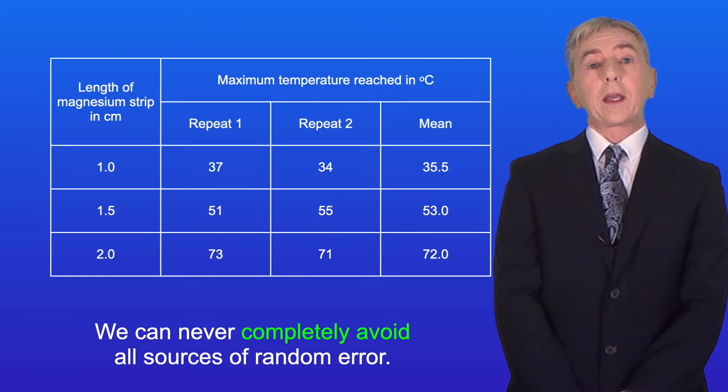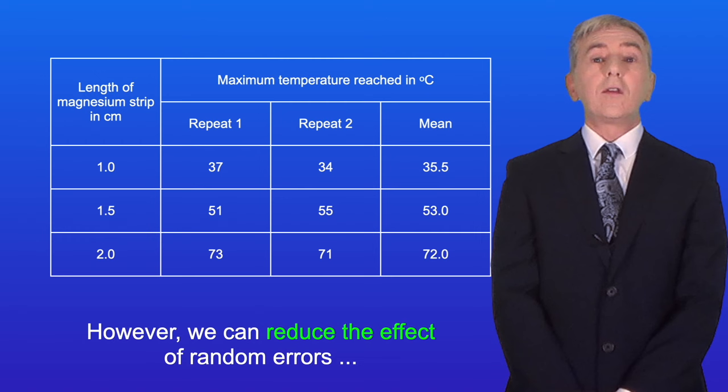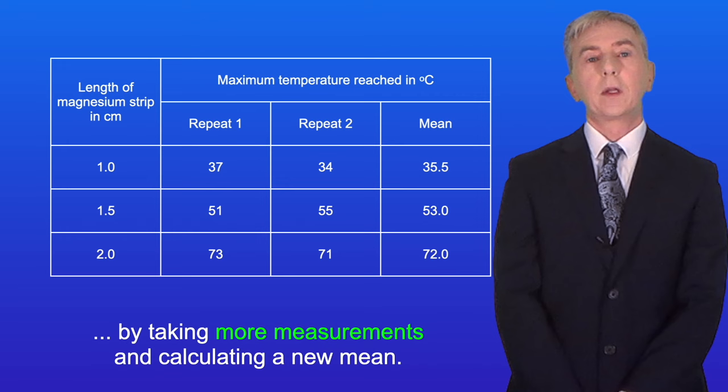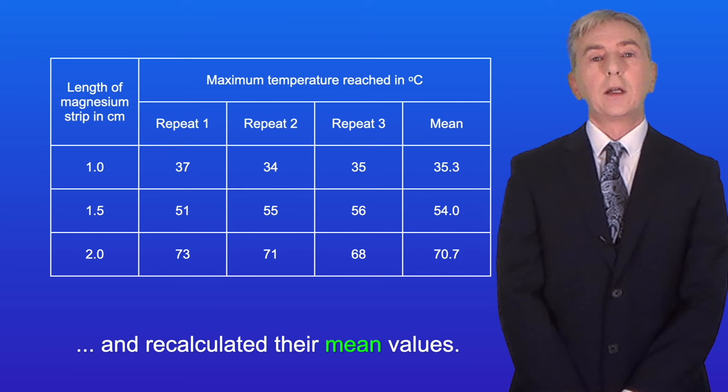Now we can never completely avoid all sources of random error. However, we can reduce the effect of random errors by taking more measurements and calculating a new mean. So in this case the students did another repeat and recalculated their mean values, and again doing this reduces the effect of random errors.